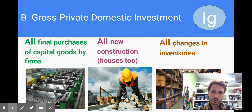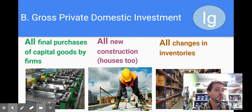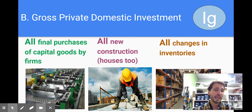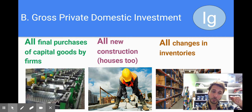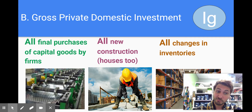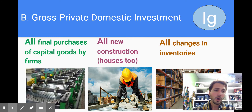First, all final purchases of capital goods by firms. So whenever a firm buys a new machine or a new tool, that's counted as investment — think of it as investment because I buy it today because it will result in growth in the future. That's why it's investment.